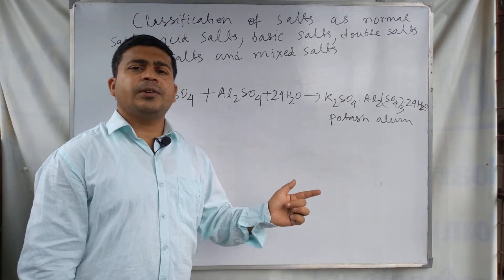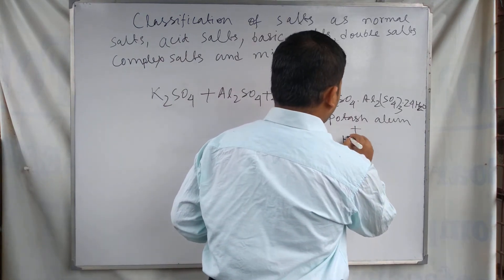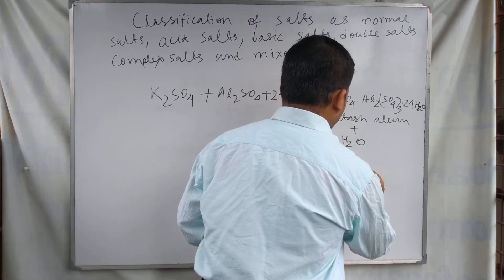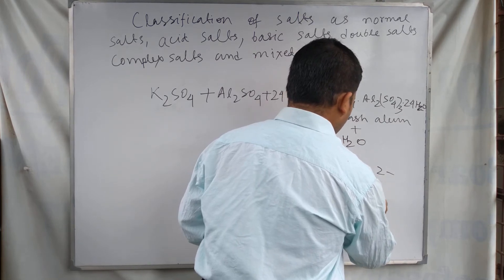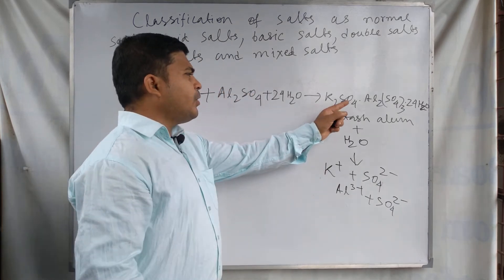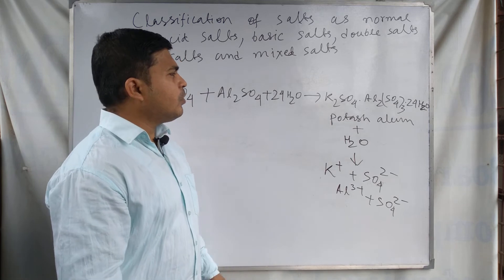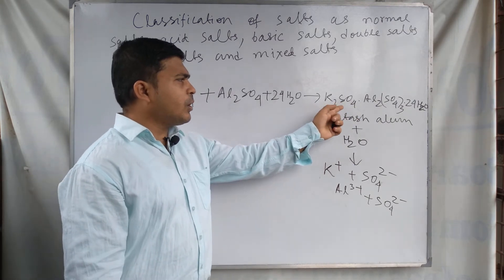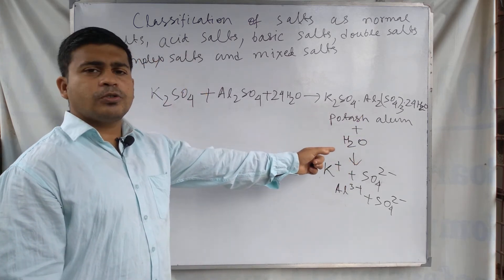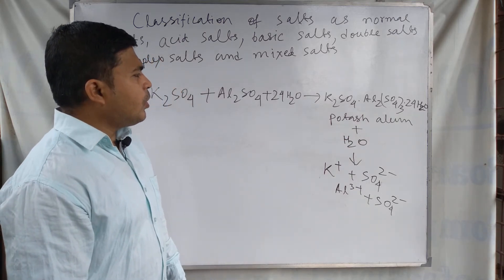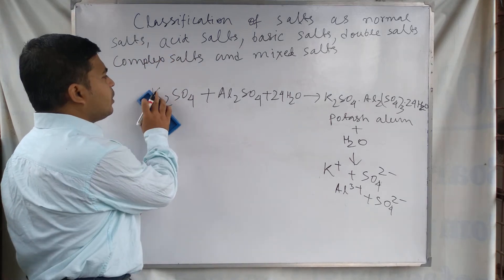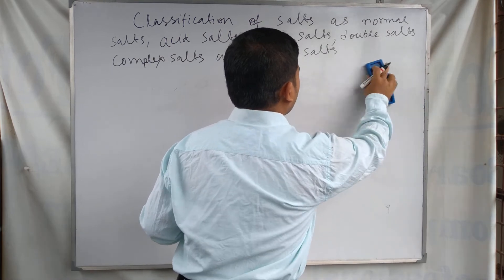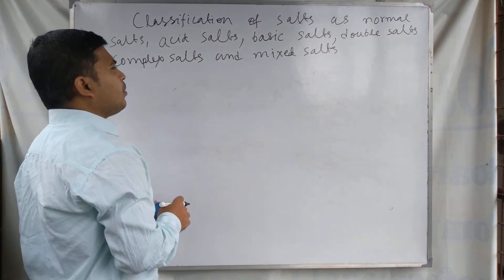Double salts do not keep their identity in aqueous solution. If we dissolve potash alum in water, it divides into its component ions — potassium ion, aluminium ion, and sulfate ion. These salts dissociate into their component ions in aqueous solution. In aqueous solution, this double salt loses its identity and the ions are produced. Double salts are formed from the saturated solution of a mixture of more than one salt crystallizing out.